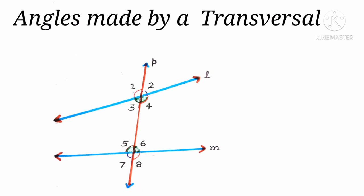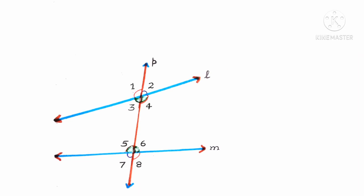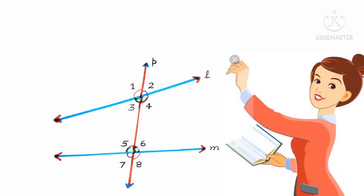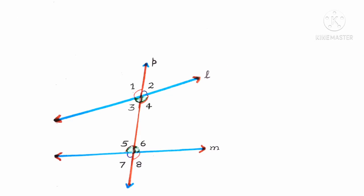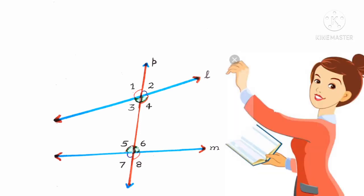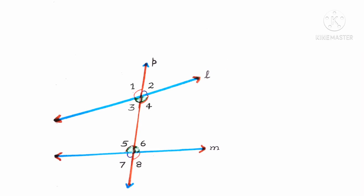Angles made by a transversal. Children, here lines L and M are intersected by transversal P and eight angles are formed. They are angles 1, 2, 3, 4, 5, 6, 7 and 8.